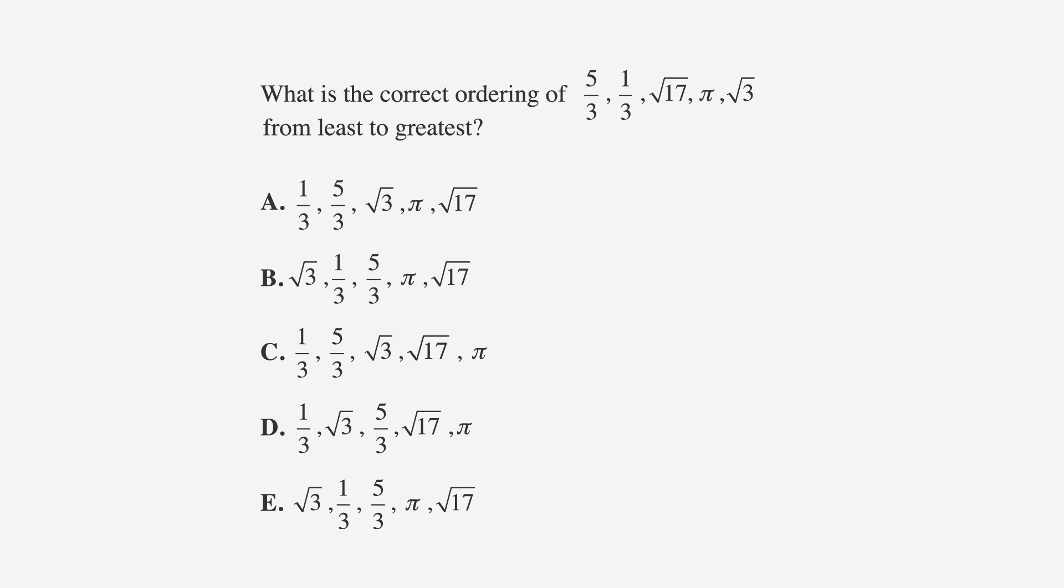Let's start with a question that asks you to organize numbers from least to greatest. Our question reads, what is the correct ordering of 5 thirds, 1 third, square root of 17, pi, and square root of 3 from least to greatest? As always, underline the facts and circle the keywords. Label your answer choices with least and greatest. We have what might look like a scary list of numbers, but all we need to do is enter them one at a time into a calculator.